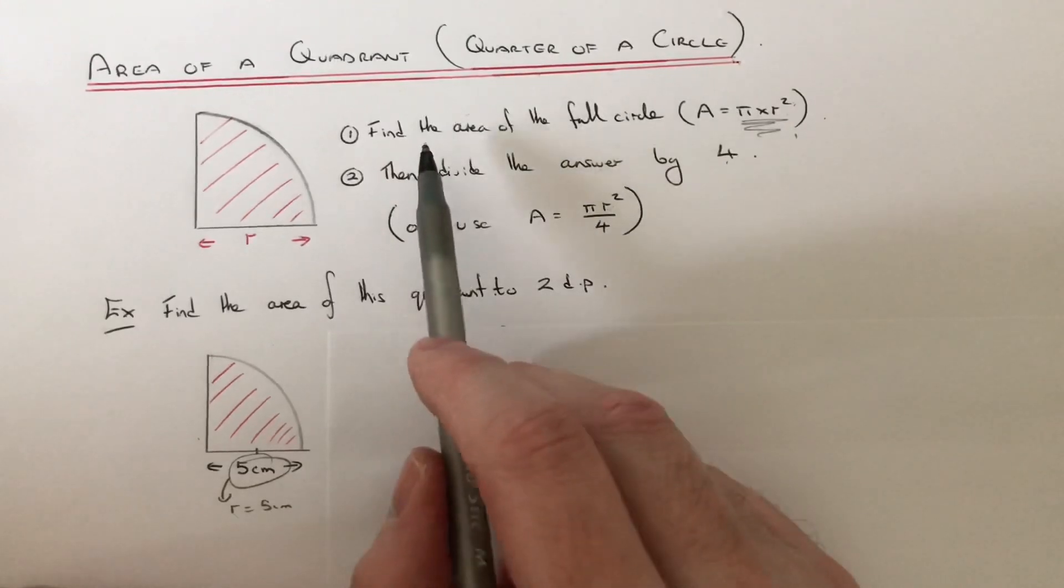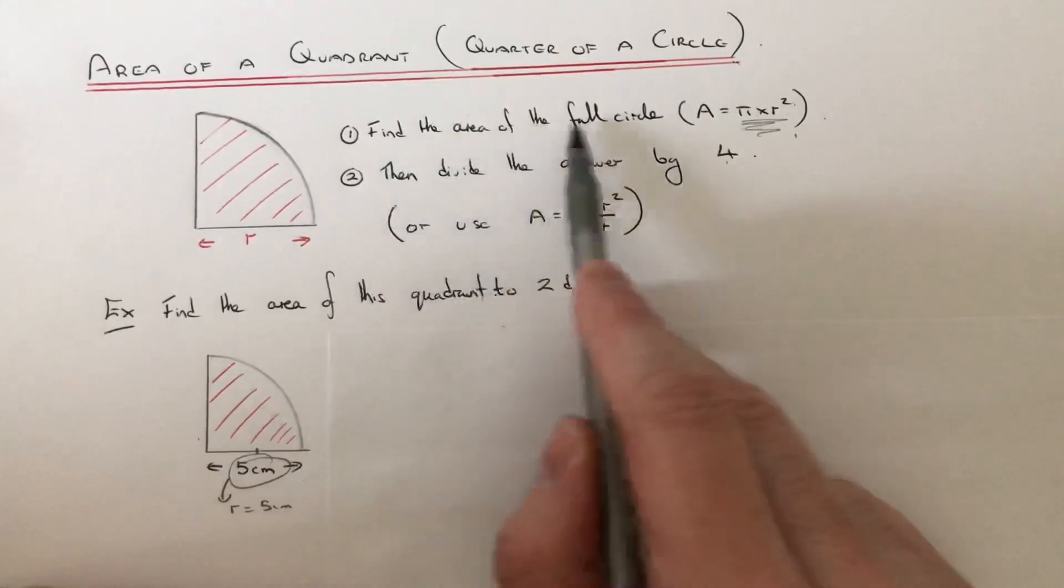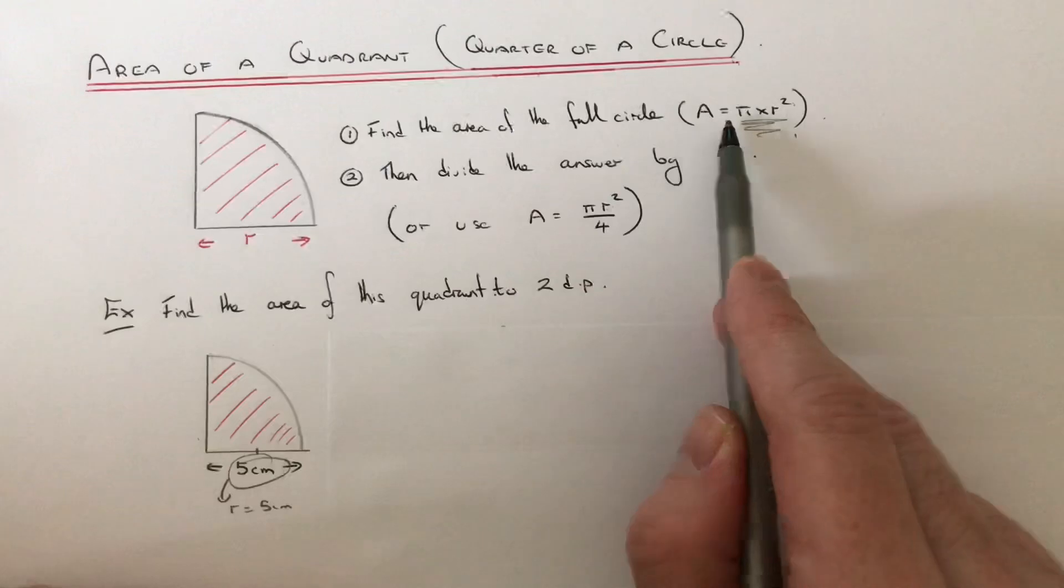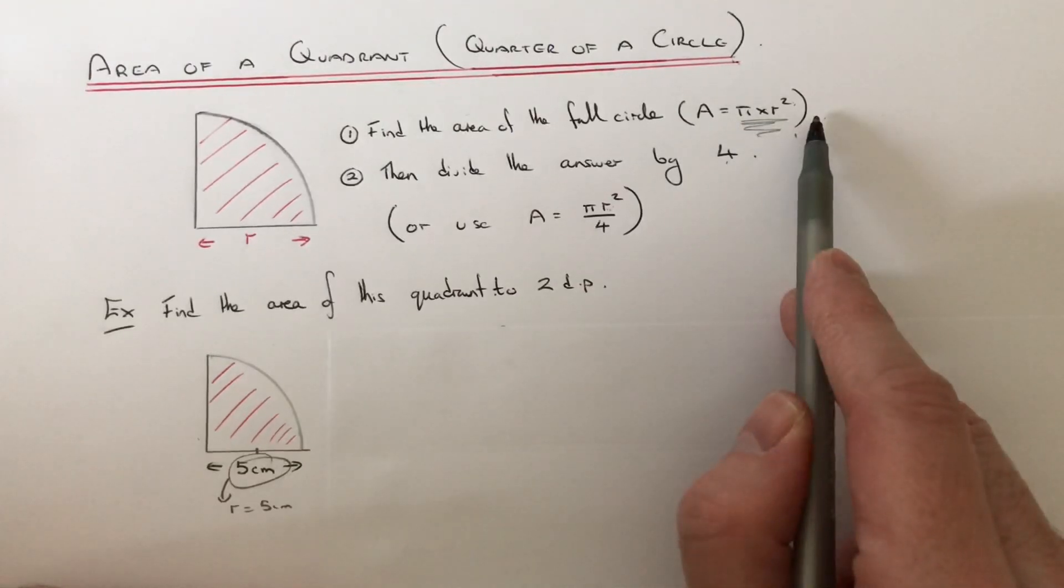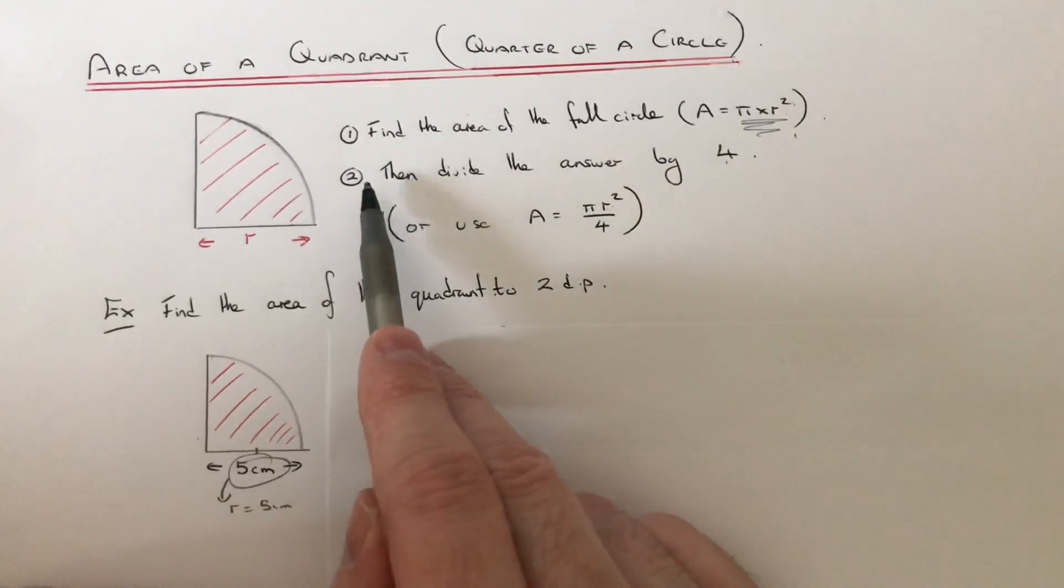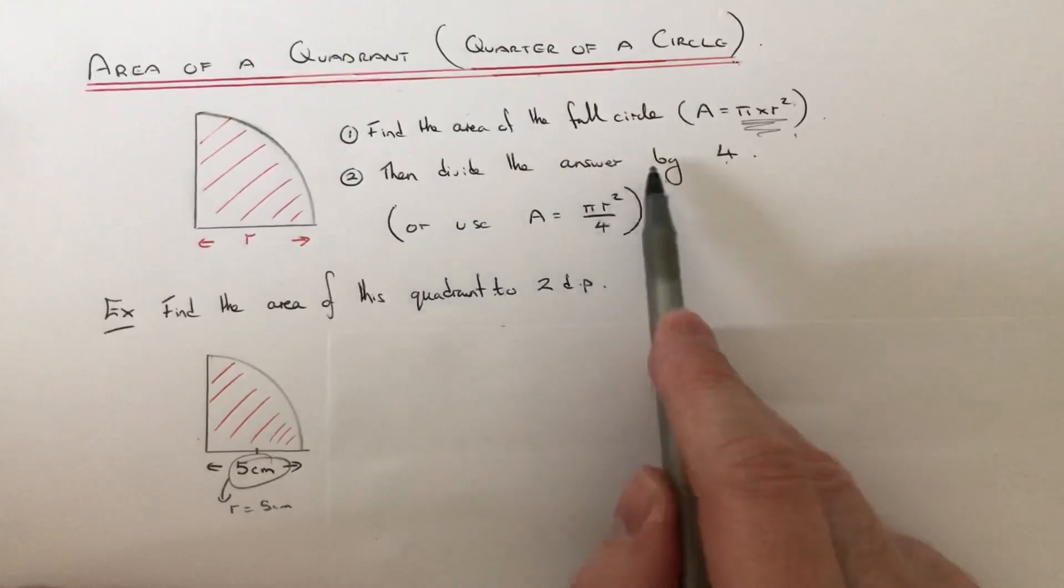So we can either do it by working out the area of the full circle using the formula pi times radius squared. And then once we've got that answer we then just need to divide it by 4.